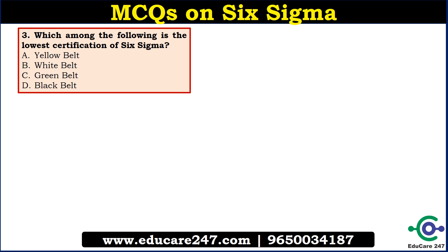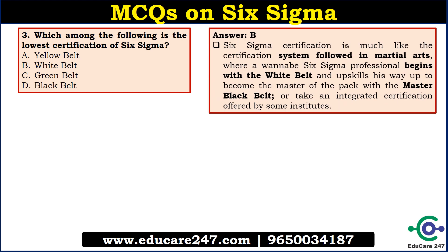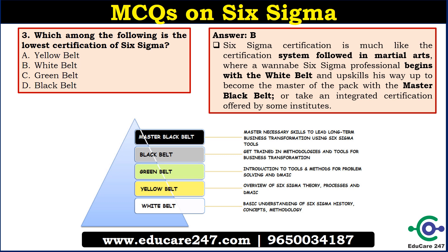The next question is: which among the following is the lowest certification of 6 Sigma? The answer is White Belt. Six Sigma certification is much like the classification followed in Martial Arts — it begins with White Belt and a person can upskill all the way to Master Black Belt. White Belt covers basic understanding of Six Sigma, history, concepts and methods. Yellow Belt covers overall Six Sigma theory, processes and DMAIC. Green Belt covers introduction of tools and methods for problem solving. Black Belt is about application of Six Sigma in business transformation, and Master Black Belt is about mastering skills to lead long-term business transformation.